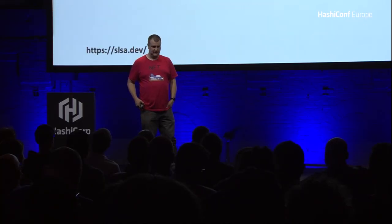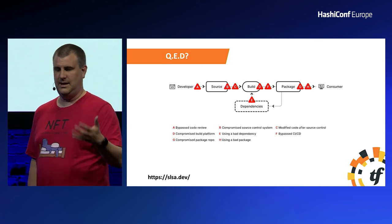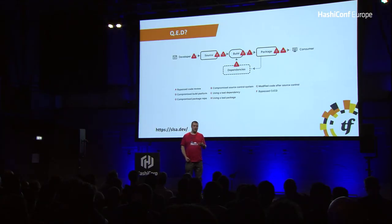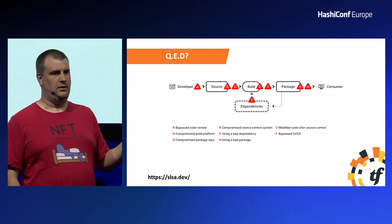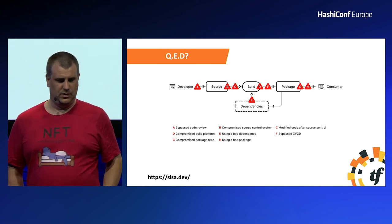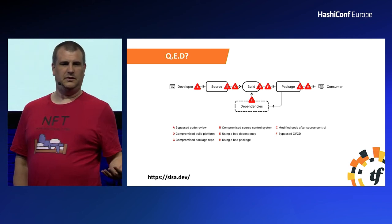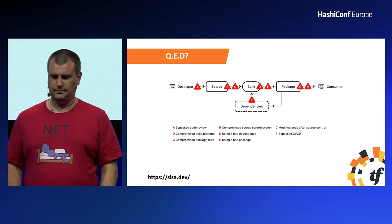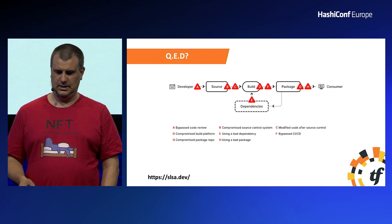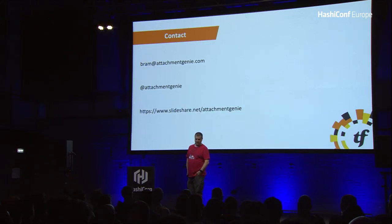That brings us to the end. Hopefully I've shown you the entire path of getting code into production and in front of users in such a way that we can now trust the product being run. We discussed having users not push bad or mistakenly bad code. We discussed how we can make sure that what we produce is what we think we produce. And then we discussed that we trust whatever we run is what we think it is. If you want to talk more, you can email me at the above email address. You want to rant on Twitter, that's my handle. And my slide deck is already on SlideShare if you want to review it.